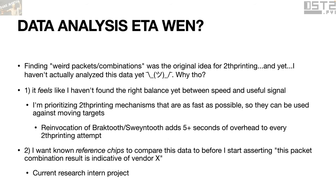I'm prioritizing getting data collection to where I want it before deeply analyzing the data. It also makes sense in this context to have reference chips to compare data to — one TI, one Espressif, one Silicon Labs, one Cypress, one Apple, one Samsung — a whole bunch of different chips — and collect known-good values for all these various weird toothprint responses. That will give me a starting point to know whether I can even differentiate between a Samsung chip and an Apple chip. Because I haven't collected that reference set yet, analyzing the data is a little bit premature.